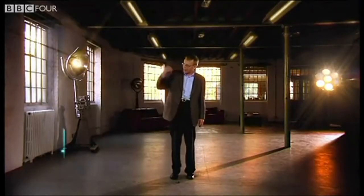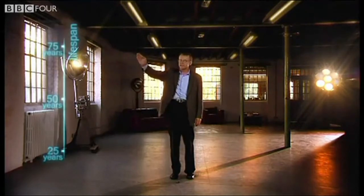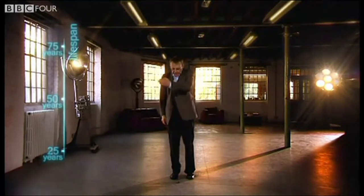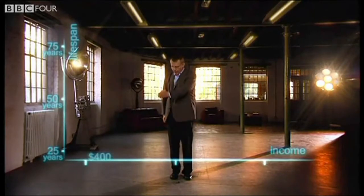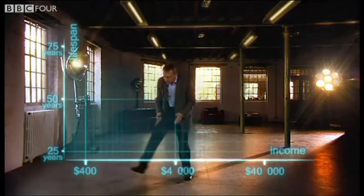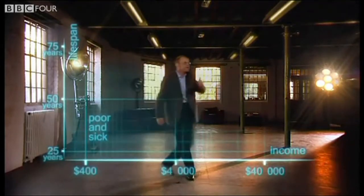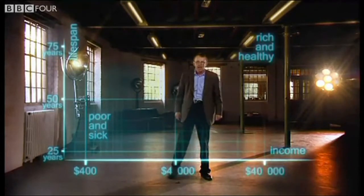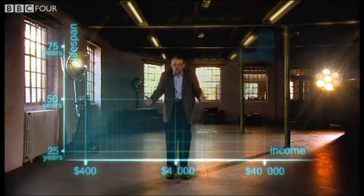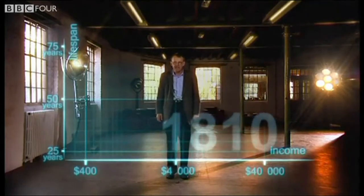So here we go. First, an axis for health — life expectancy from 25 years to 75 years. And down here an axis for wealth — income per person: $400, $4,000, and $40,000. So down here is poor and sick, and up here is rich and healthy.